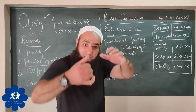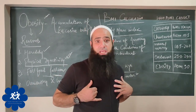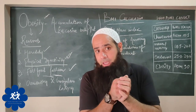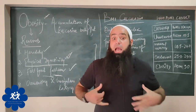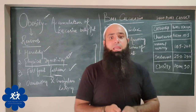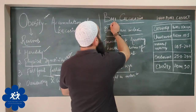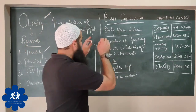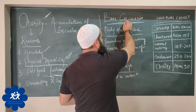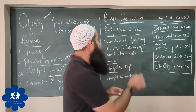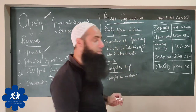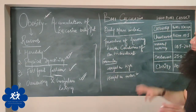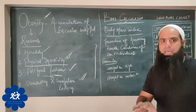Now, to assess our health condition — whether we are underweight, overweight, or healthy — there is a procedure called BMI calculation, which is related to obesity. Through this system and procedure, we can determine what our health condition is. BMI calculation means Body Mass Index — it is a procedure for assessing the health condition of an individual.